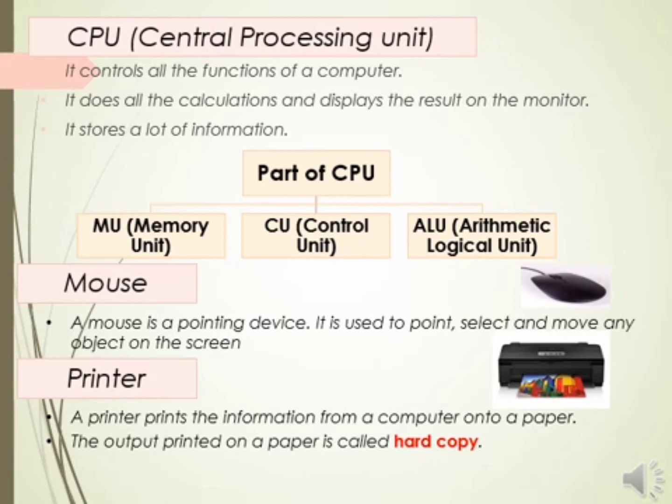The data and instructions are also stored in this unit which are to be processed later on. The second part is the CPU Control Unit. It controls and manages the working of all the parts of the computer, like the way a traffic policeman manages traffic on the road.